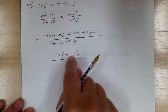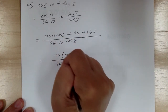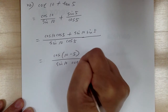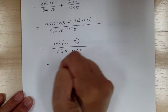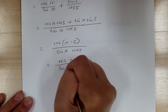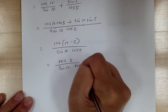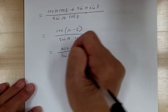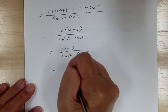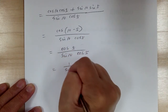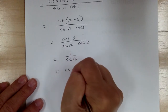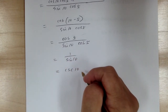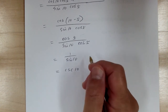So this identity gives us cosine of 5 over sine 10 cosine 5, and cosine 5 cancels out. This equals 1 over sine 10. Since 1 over sine is cosecant, this becomes cosecant of 10, which would be the second answer choice.